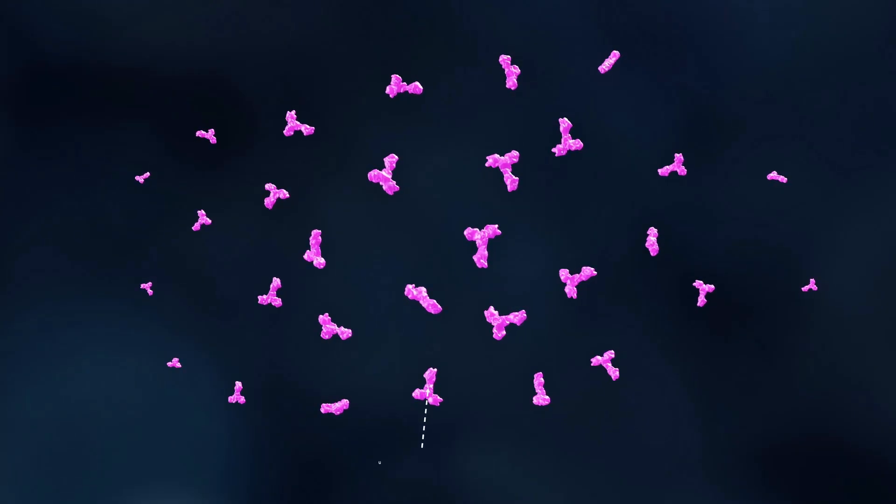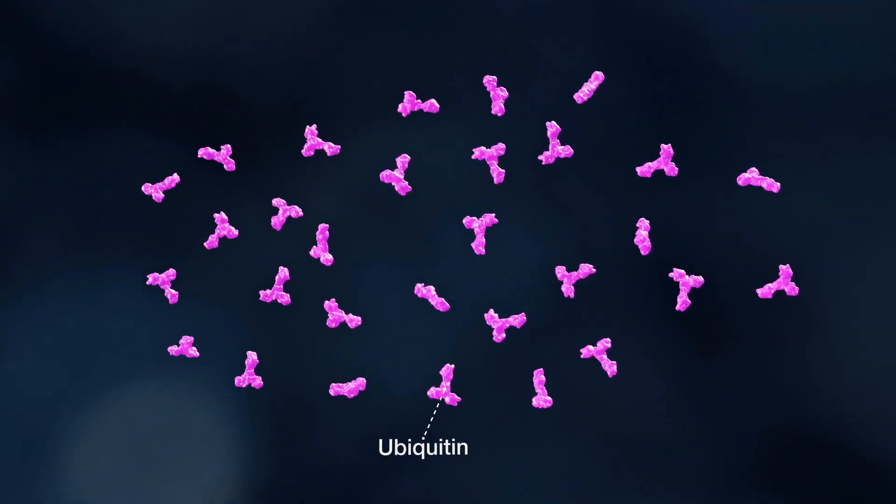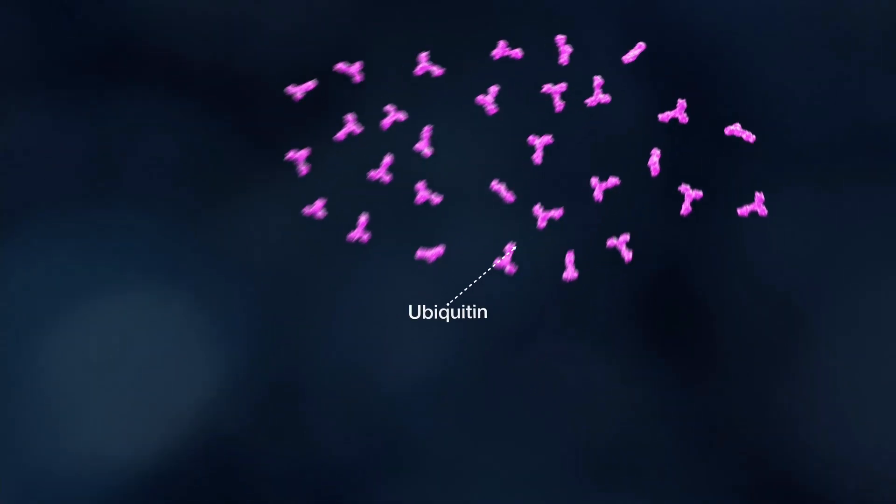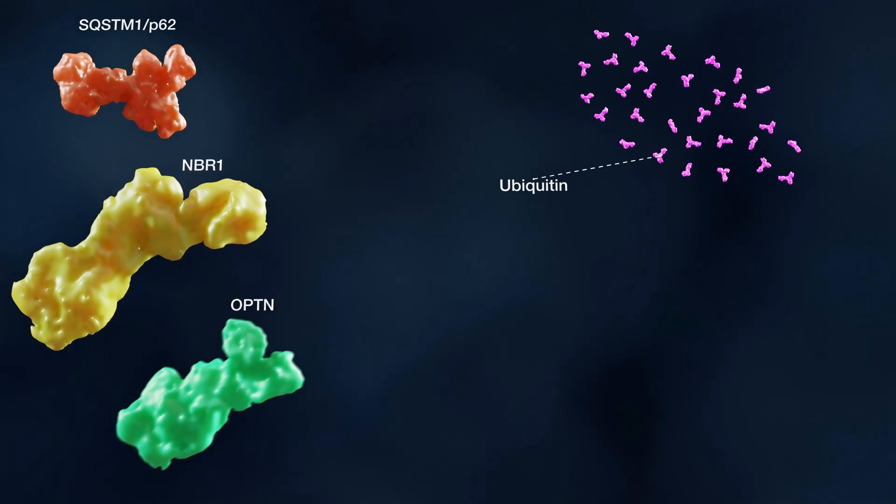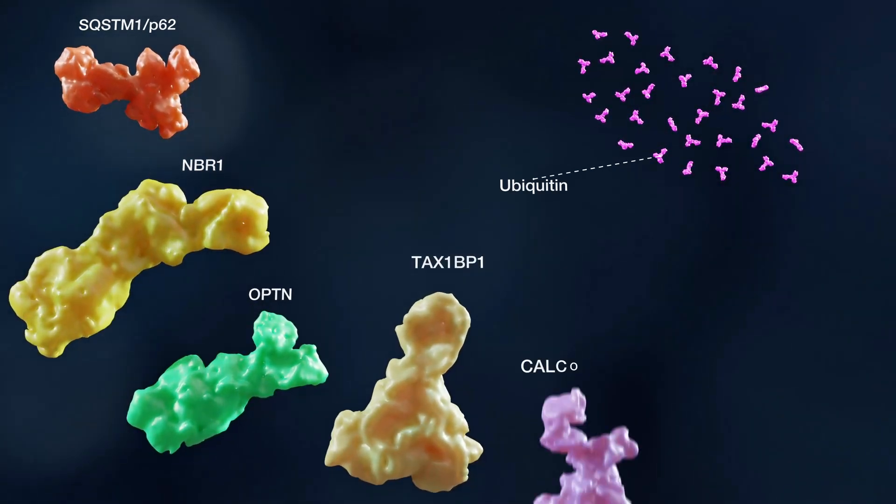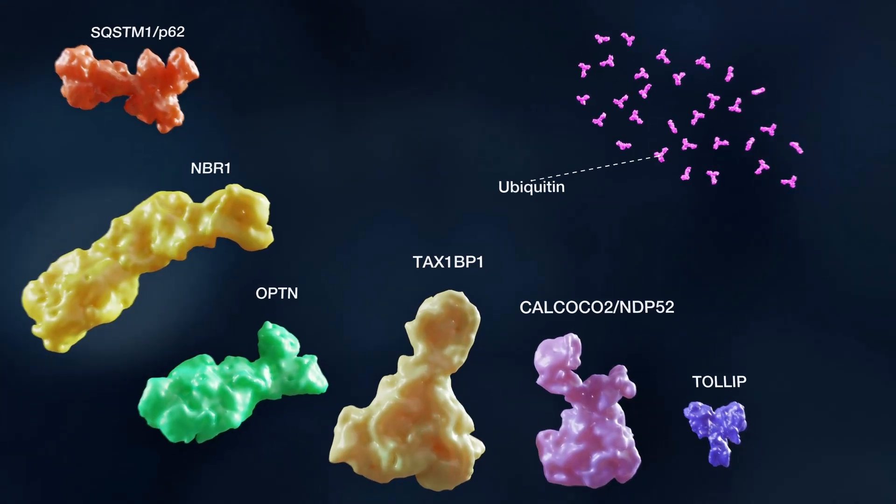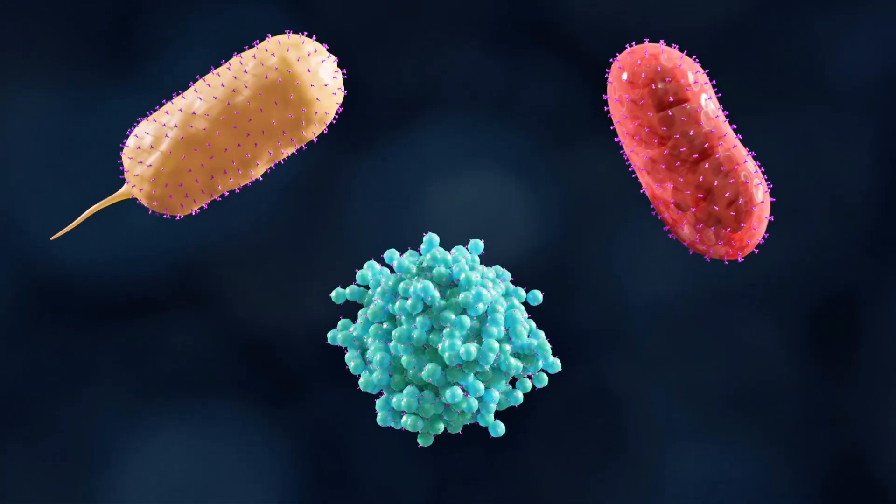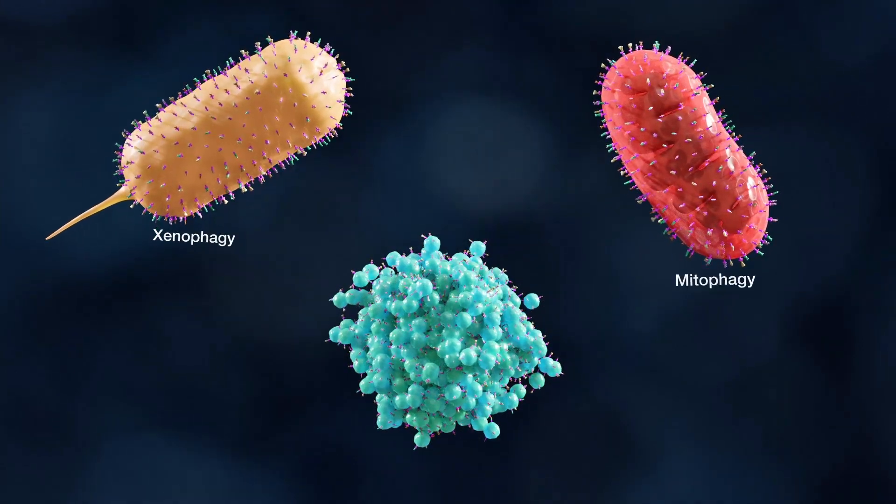Engagement of the ubiquitin-dependent autophagy receptors is dictated by the ubiquitylation of the cargo destined to degradation. For example, P62, NBR1, Optineurin, TAX1BP1, NDP52, and TOLLIP all have an ubiquitin-binding domain to bind ubiquitylated cargos during xenophagy, mitophagy, and aggriphagy.